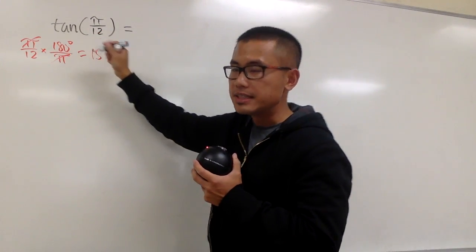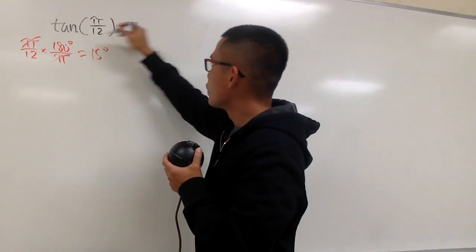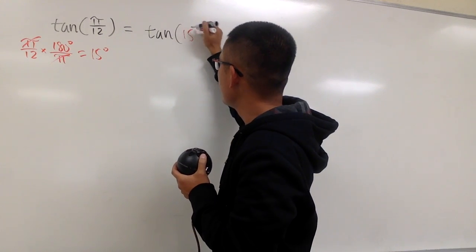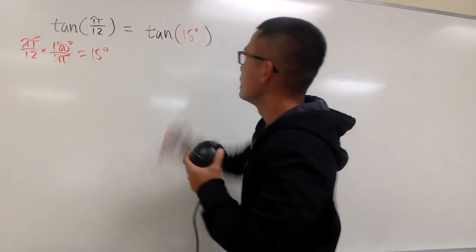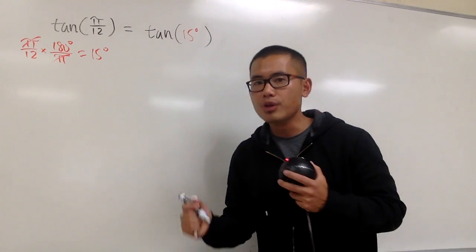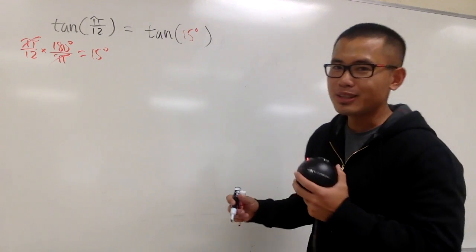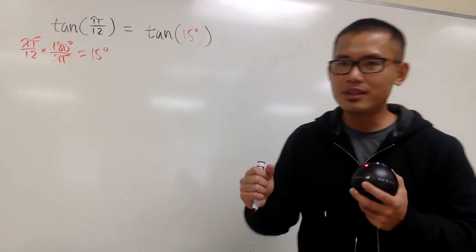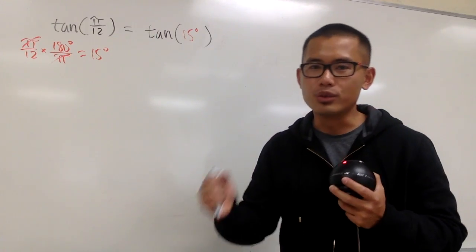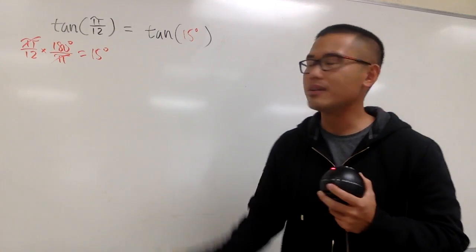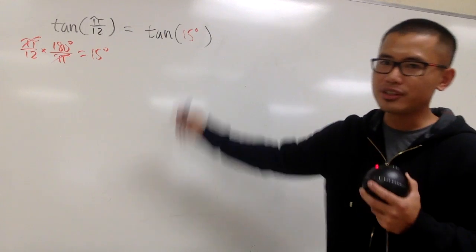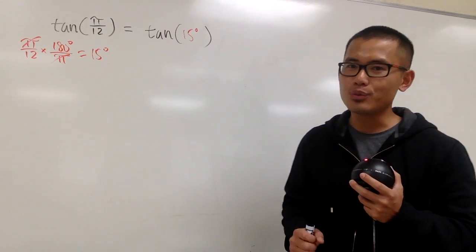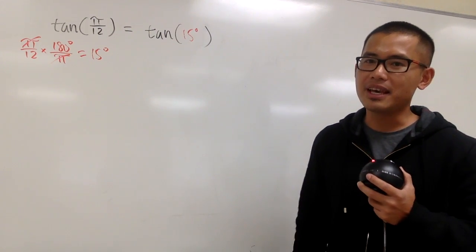So this is the same as asking: what's the exact value for tangent of 15 degrees? We cannot just look at the unit circle for this — we have to use either the sum or the difference formula for tangent, and we have to think about what minus what equals 15.